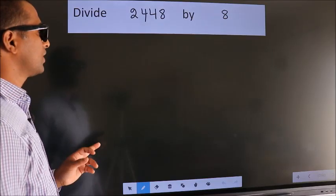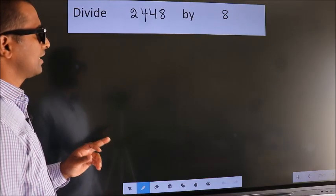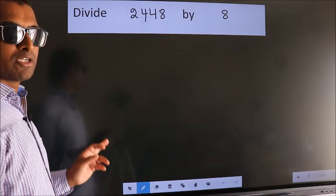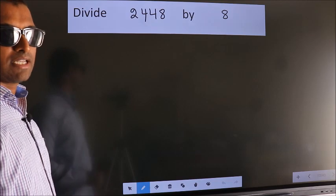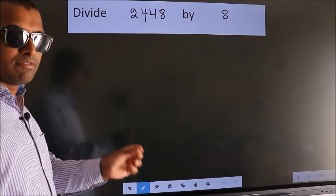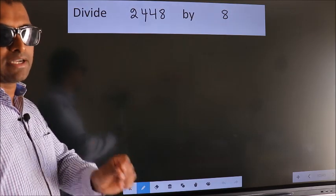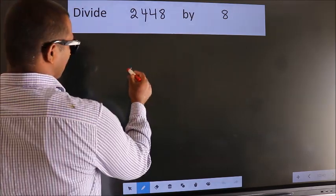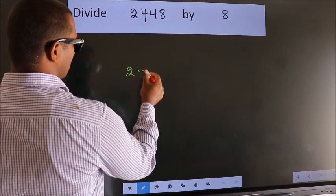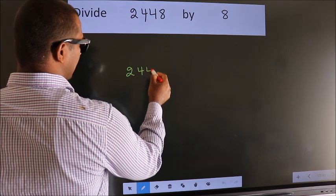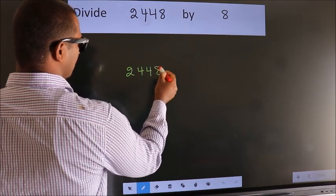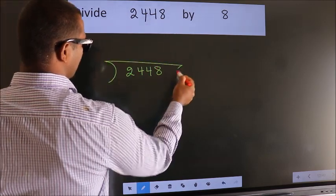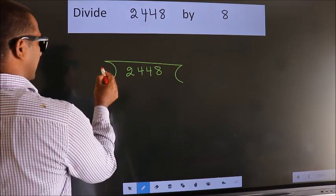Divide 2448 by 8. To do this division, we should frame it in this way: 2448 here, 8 here.